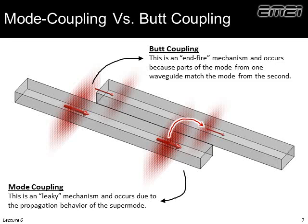We also talked about mode coupling versus butt coupling. Butt coupling is where we have an end-fire condition — we have a discrete start of some waveguide, there's an electromagnetic field that hits the interface of that guide, and some of it end-fires into the mode supported by the waveguide. Mode coupling is where we have two waveguides next to each other and we get this slow leaking of power from one waveguide into the other. We differentiate the two.